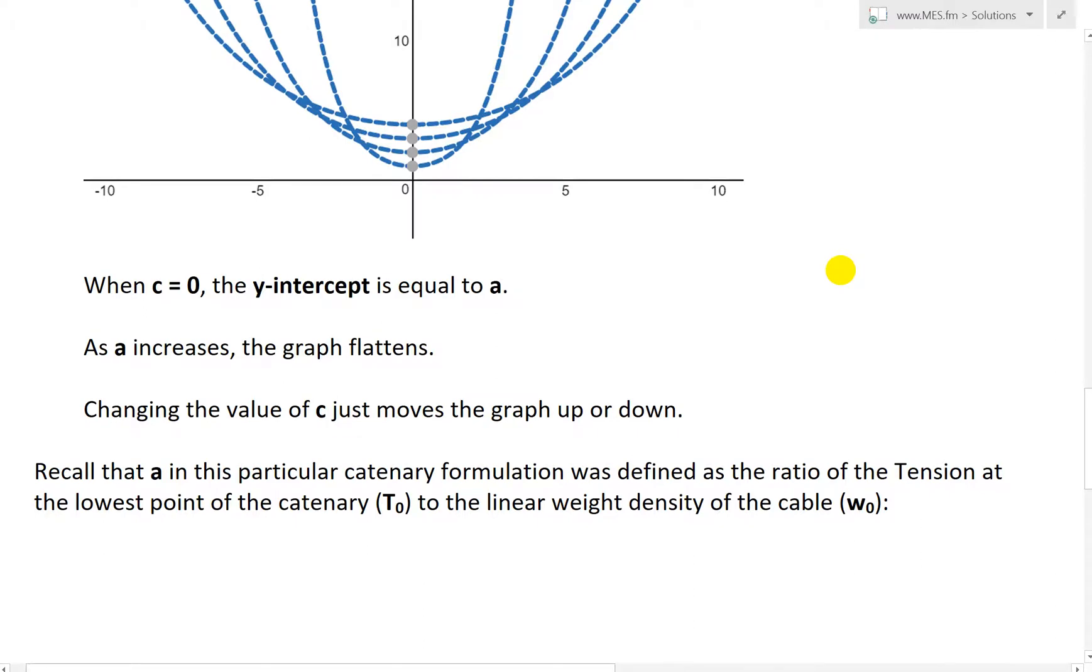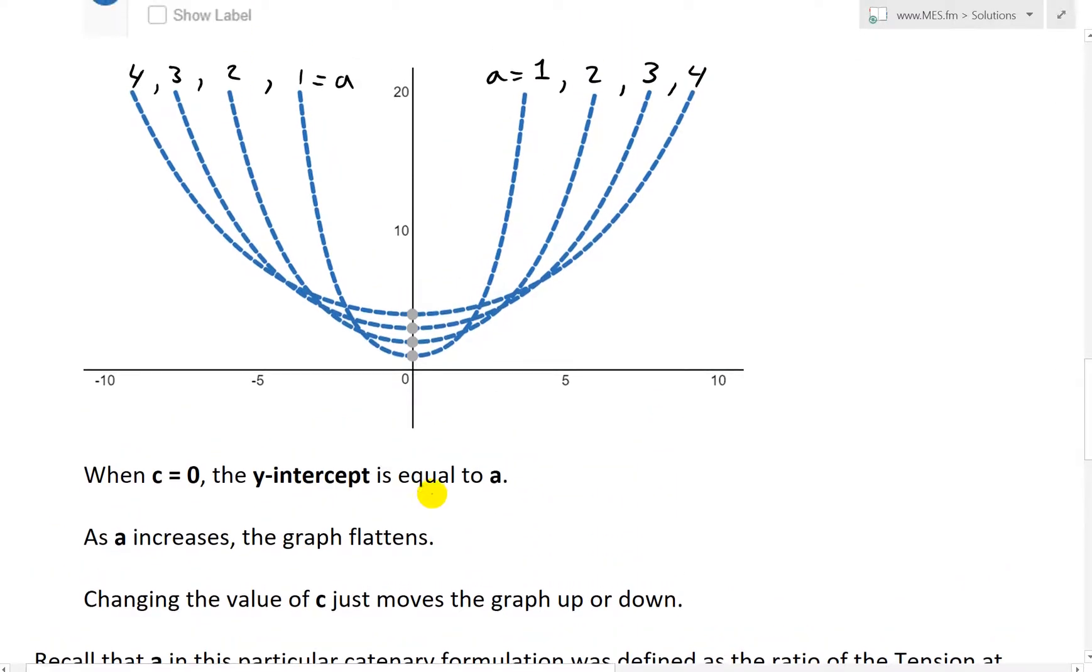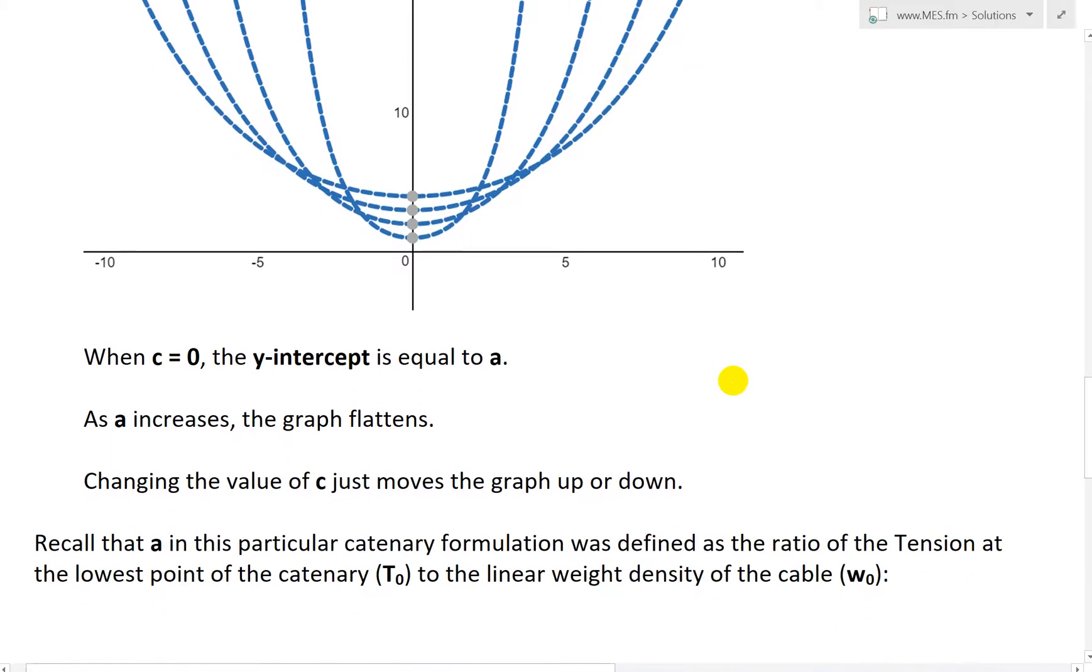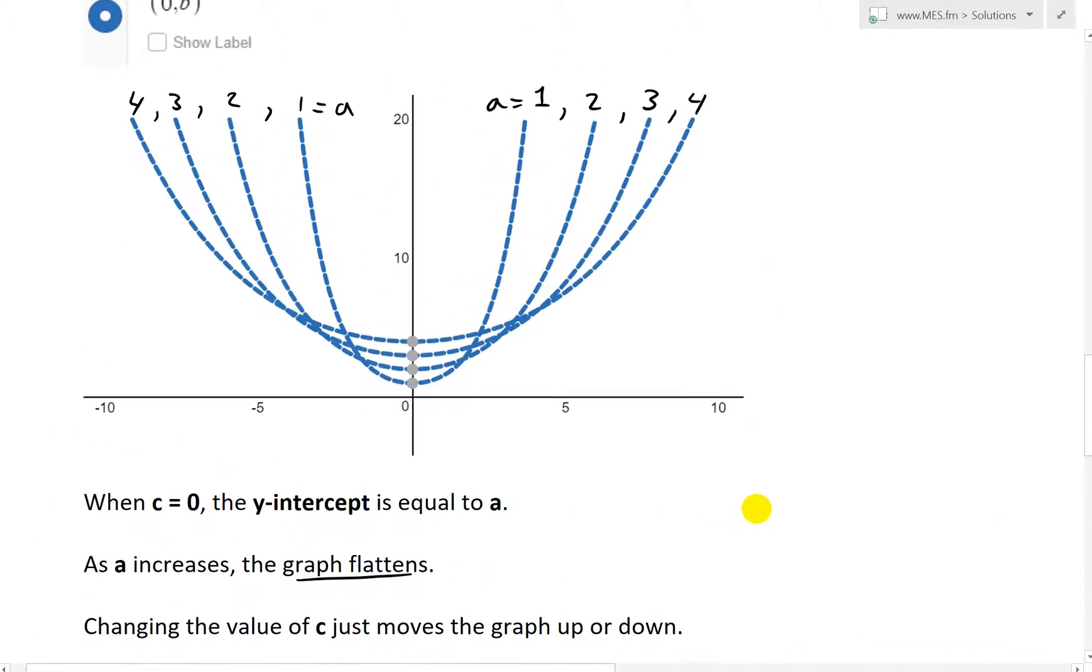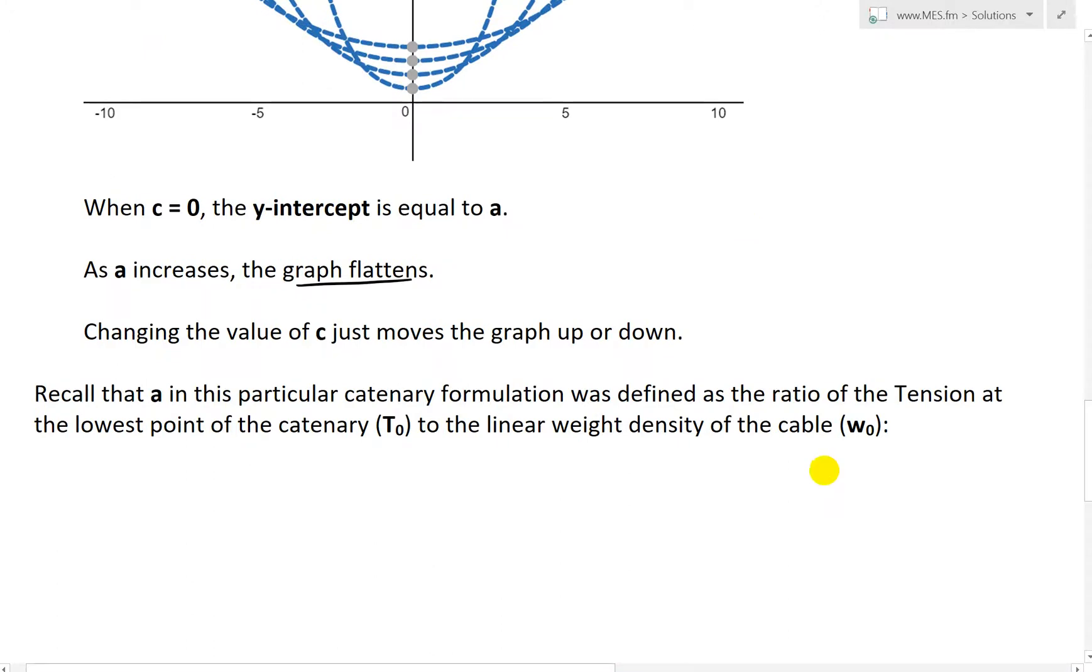So when C is equal to 0, the y-intercept is equal to A, as I just showed. And as A increases, the graph flattens. And changing the value of C just moves the graph up or down.